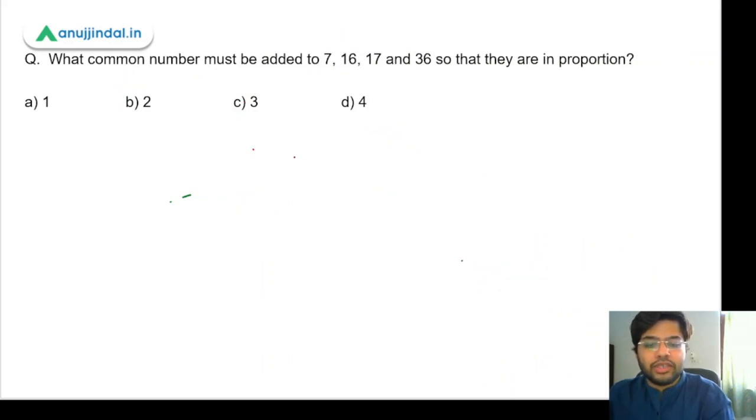For example, if the question is what common number must be added to 7, 16, 17, and 36 so that they are in the same proportion, we'll do the same thing. x is equal to (A times D minus B times C) upon (A plus D minus B plus C).